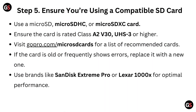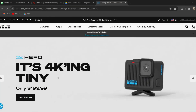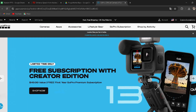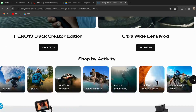Step 5, ensure you are using a compatible SD card. Use a microSD, microSDHC, or microSDXC card. Ensure the card is rated Class 10 / V30, UHS-3 or higher. Visit GoPro.com/microSD-cards for a list of recommended cards.